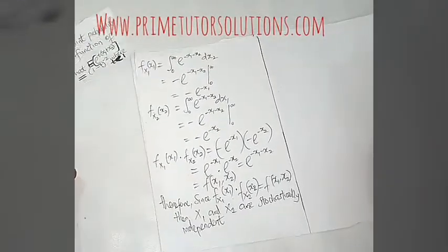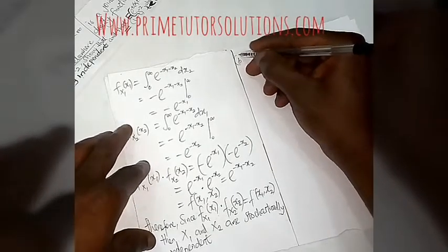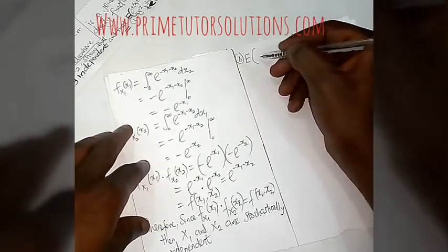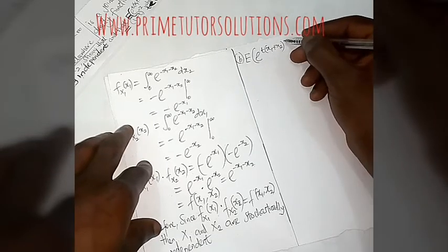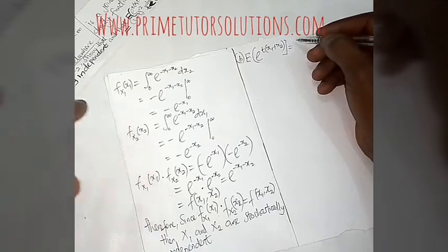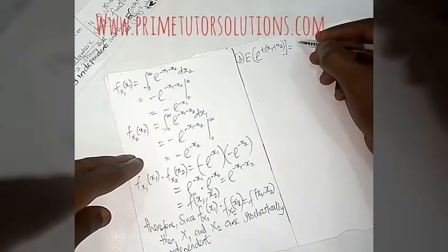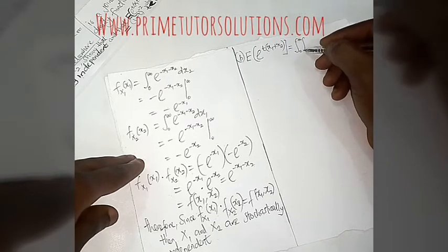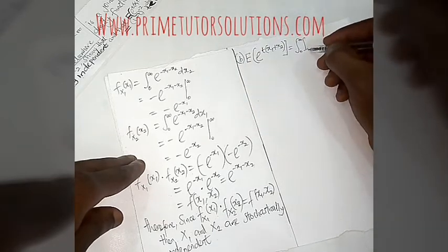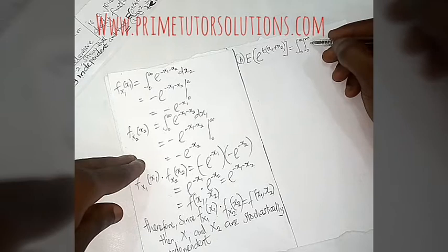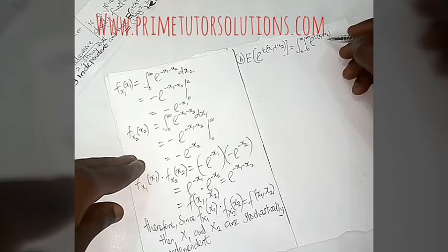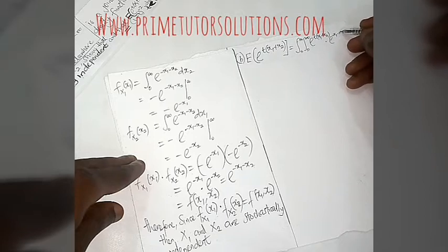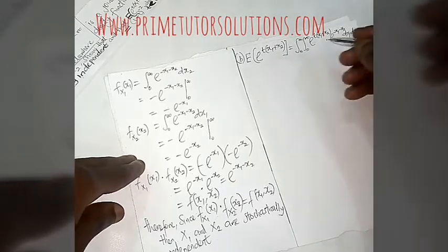Let's show this. The expected value of e raised to the power t(x1 plus x2) is equal to the double integral from zero to infinity over x1 and x2 of the product of e raised to the power t(x1 plus x2) with the joint function f(x1, x2), which is e raised to the power minus x1 minus x2, times dx1 dx2.